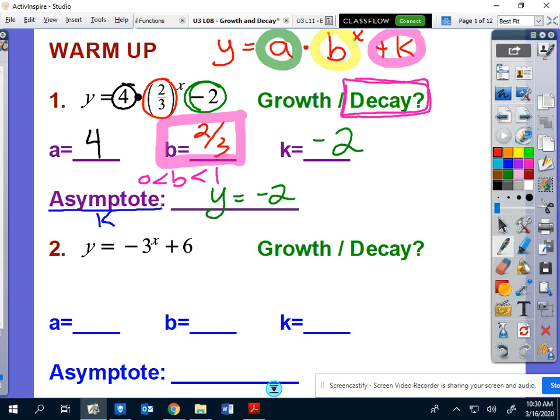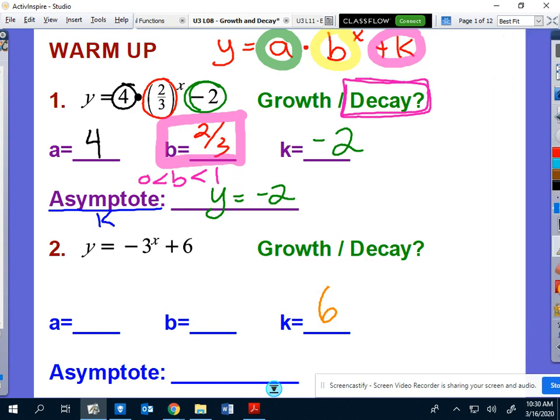So try out this second one. See if you can identify what your a value is, what your b value is, and what is your k value. If it were me, I'm going to start at the end, because that's pretty straightforward. My k value is positive six, so I can immediately say that means that my y equals six. That's my asymptote.